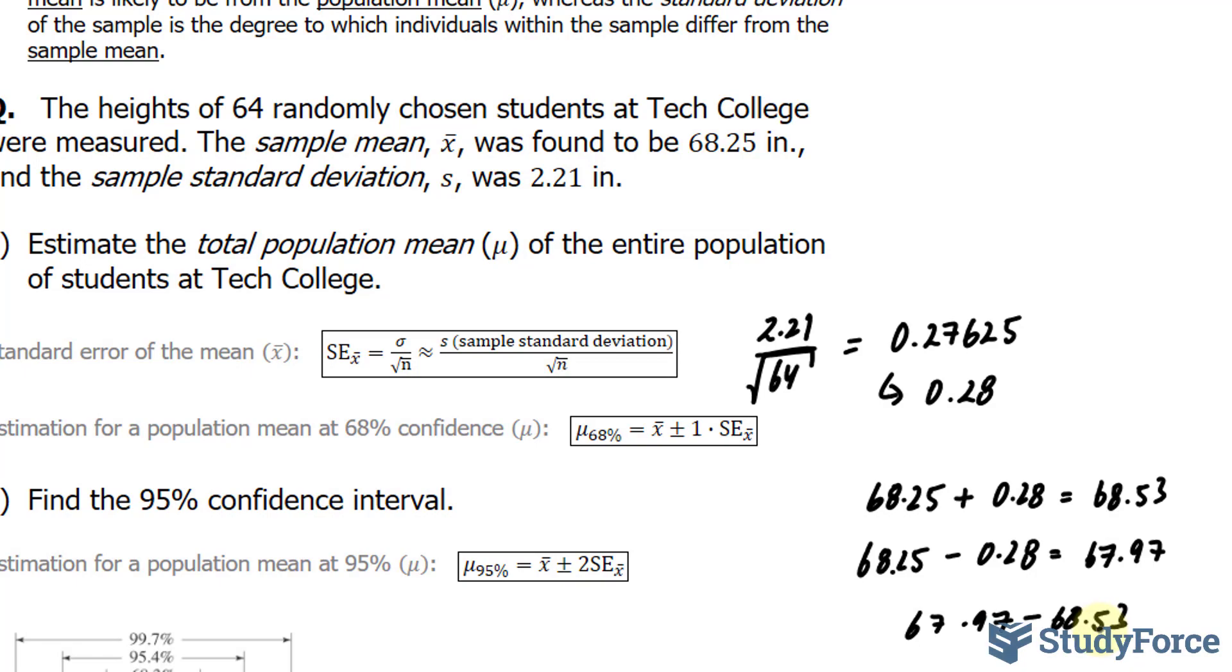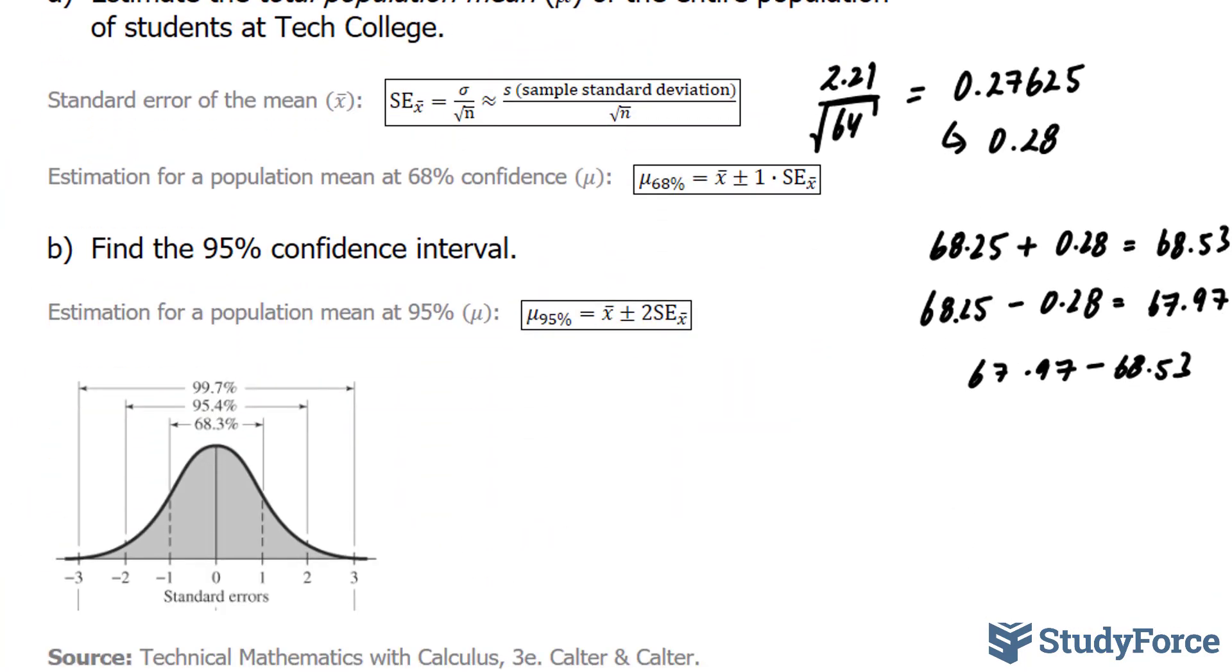Let's move on to question B. In question B, they ask us to find the 95% confidence interval. Now, the only difference between this and what we just did is that we have to multiply the standard error that we found in A by 2.